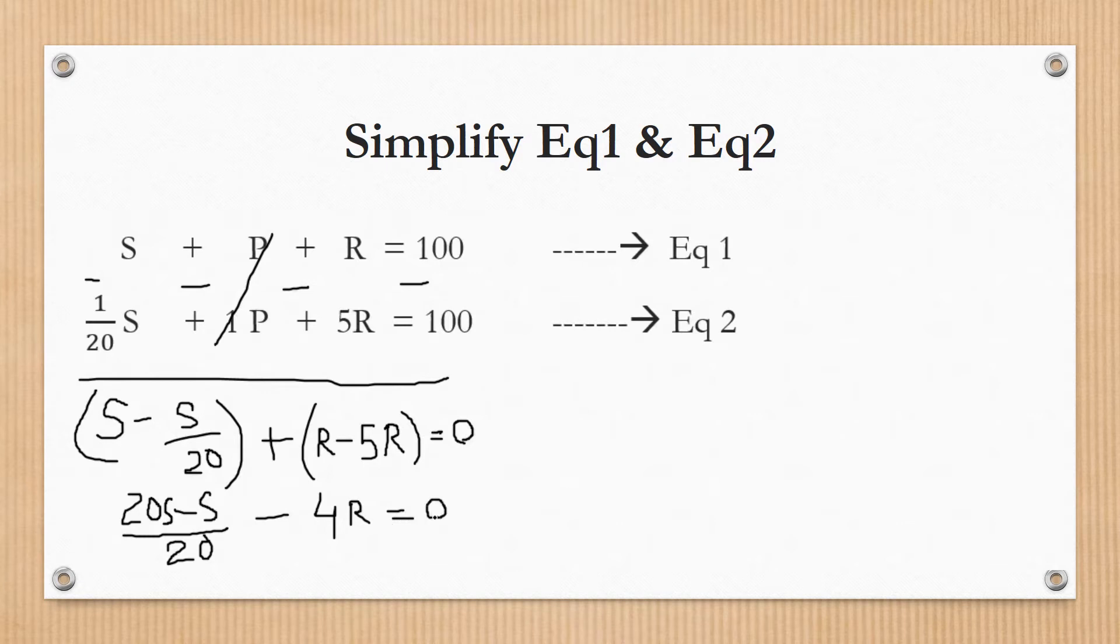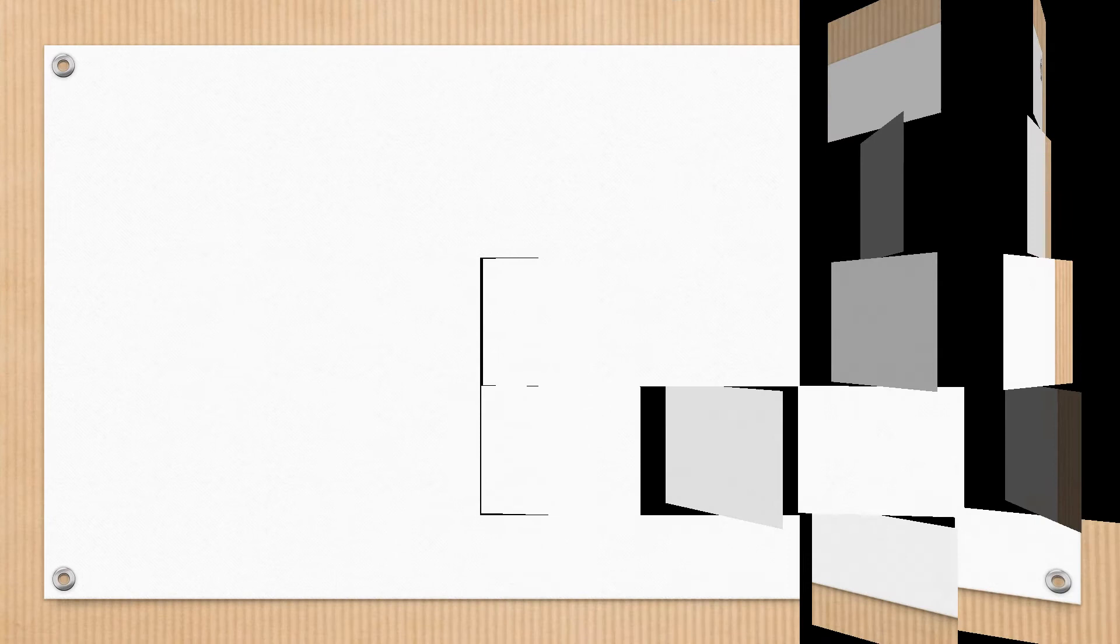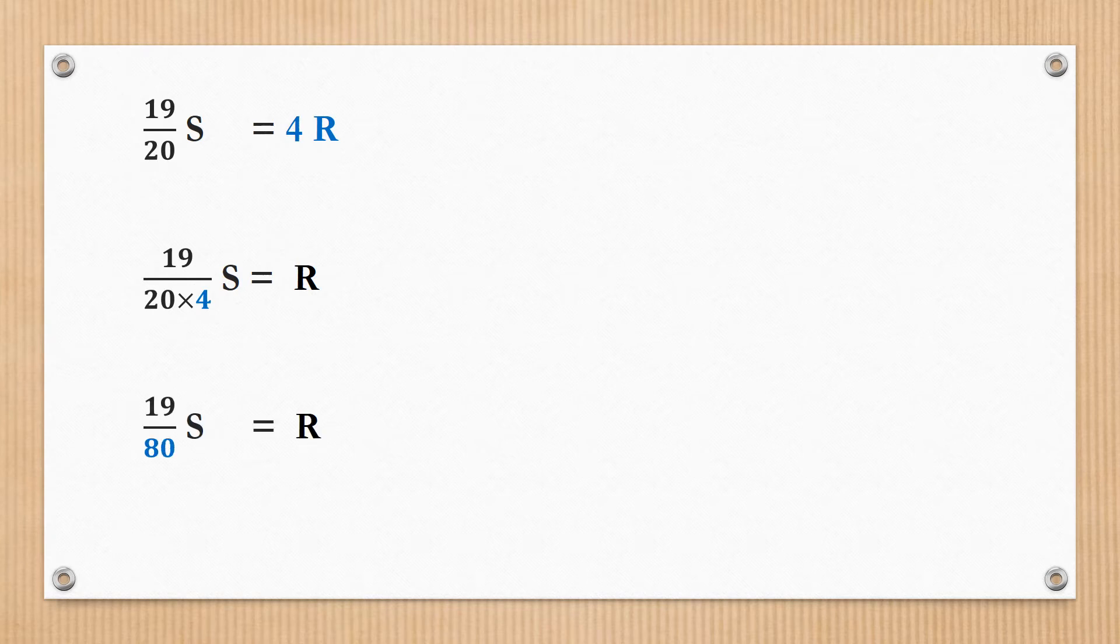Move the 4R to the right side, so it becomes plus 4R. 19S divided by 20 equals 4R. Let's move 4 to the left side and find R. So R becomes 19S by 80.